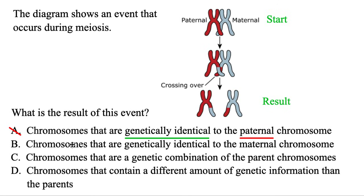Option B: chromosomes that are genetically identical to the maternal chromosome. That would mean they look exactly like the blue one, but neither of them is completely blue — so that's not true. Option C: chromosomes that are a genetic combination of the parents — and that's exactly what we have. It looks about a 75-25 split, and it is a good combination of both of them. So C is correct.